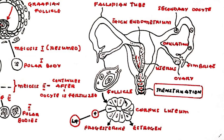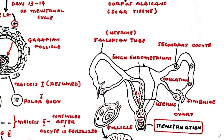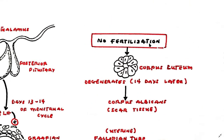At this stage, the follicle is very large and makes up a significant portion of the ovary. This follicle becomes the corpus luteum in response to luteinizing hormone. The corpus luteum produces progesterone, estrogens, and other hormones, causing the endometrium to thicken further, develop its vasculature and glands, and prepare for implantation. If fertilization does not occur, the corpus luteum degenerates about 14 days later and becomes scar tissue known as the corpus albicans.